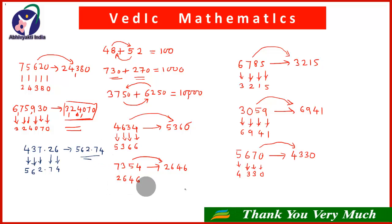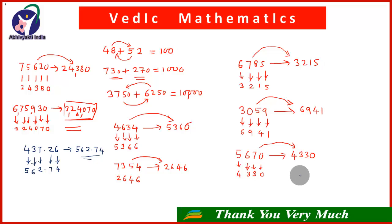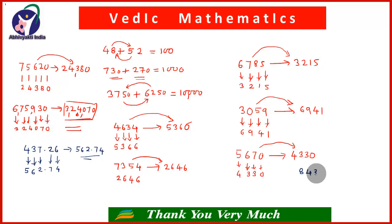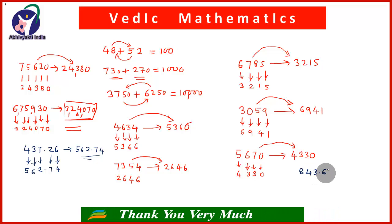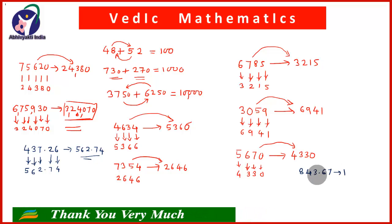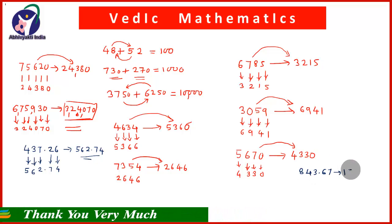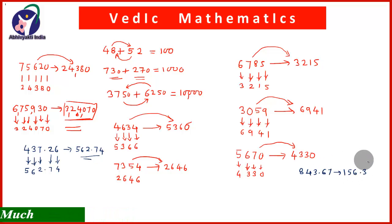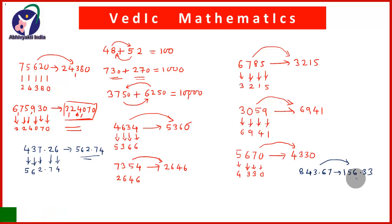Take one more example: 843.67. Its complement: 8 and 1 give 9; 4 and 5 give 9; 3 and 6 give 9; then decimal point; 6 and 3 give 9; 7 and 3 give 10. So the complement of 843.67 is 156.33.